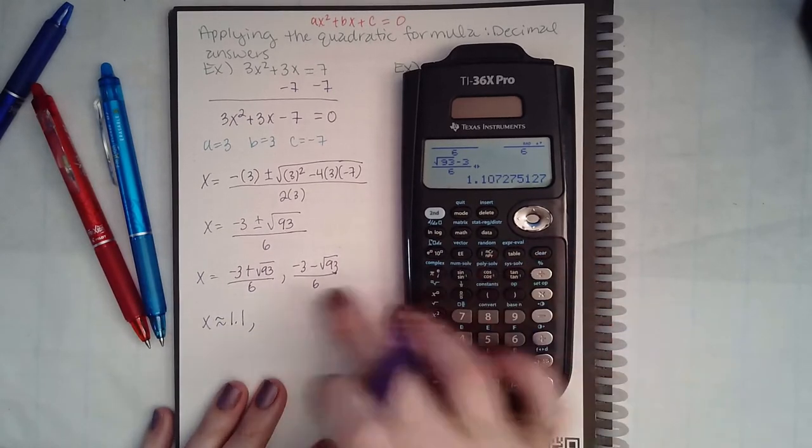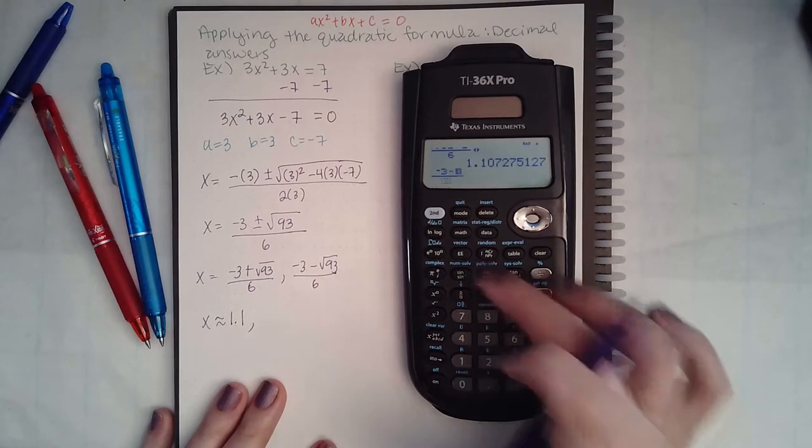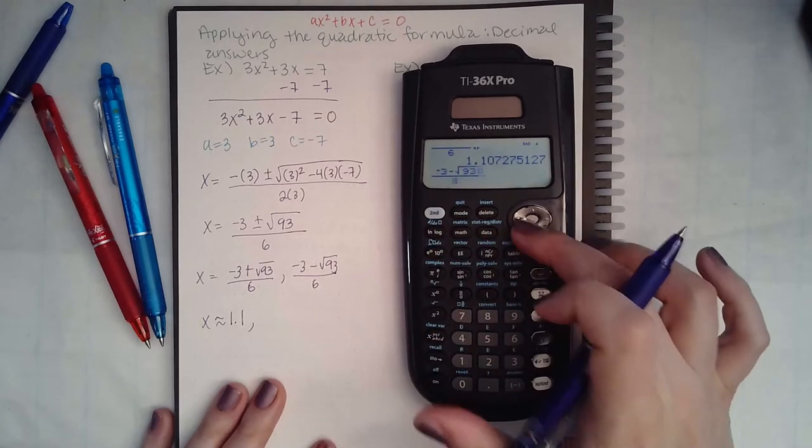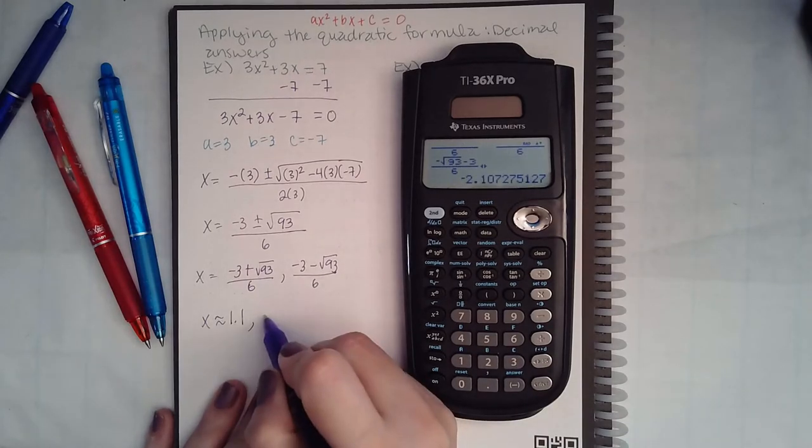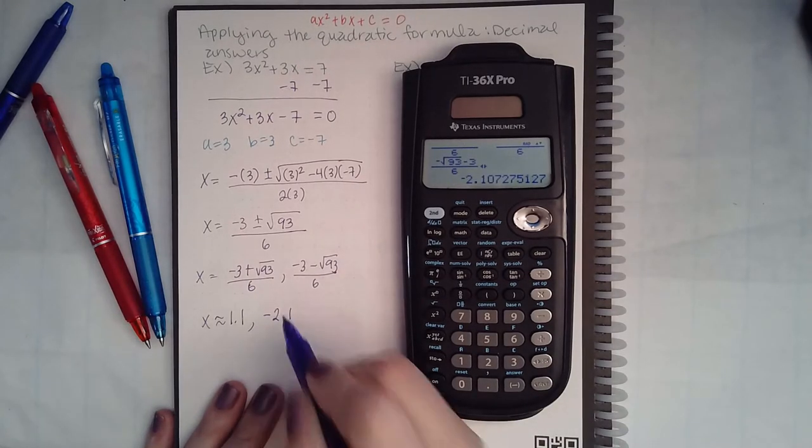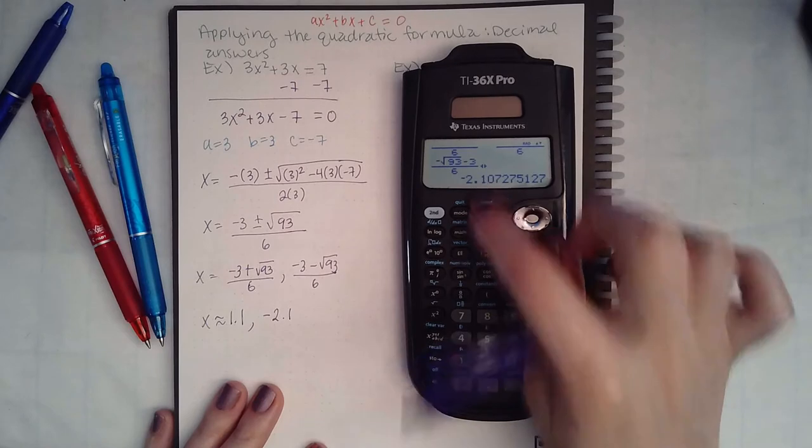Now I'm going to do the same thing but I'm going to type in negative 3 minus square root of 93 over 6, double arrow again, and we get negative 2.1. These are the two solutions that they want.